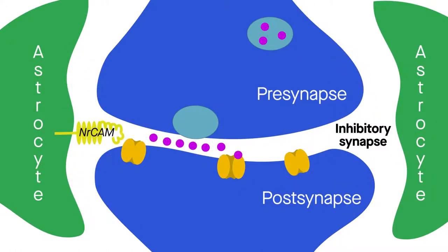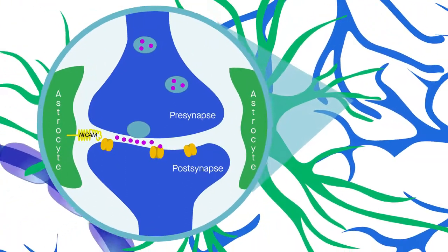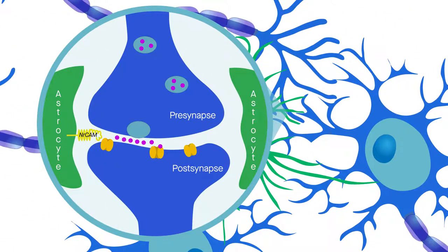That NR-CAM on astrocytes and neurons serves as a physical bridge between these cells suggests a new mechanism for how astrocytes modulate inhibitory synapses. Future studies will help researchers better understand how these microscopic components interact to produce the complex wiring of cells in the brain.